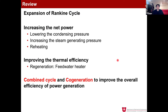Before we talk about the refrigeration cycle, I'm going to review what we learned in the last lecture. In the last lecture, we talked about the expansion of the Rankine cycle — how we can improve the net power output and the thermal efficiency. In order to increase the net power, we could lower the condensing pressure, increase the steam generating pressure, or use reheating. By doing all these, we can expand the area of the Rankine cycle surrounded by the four processes.